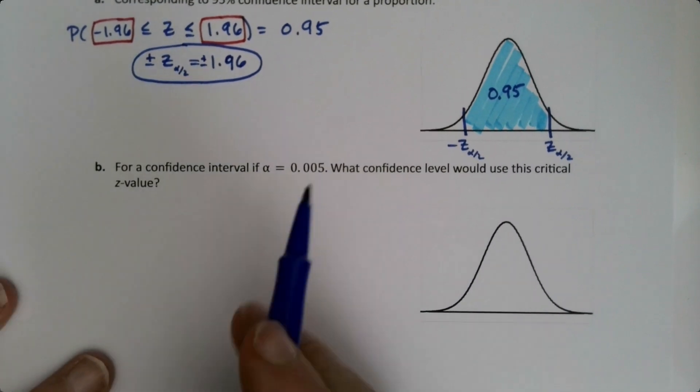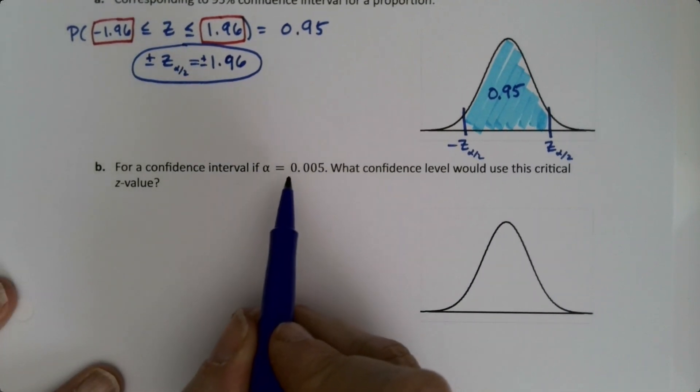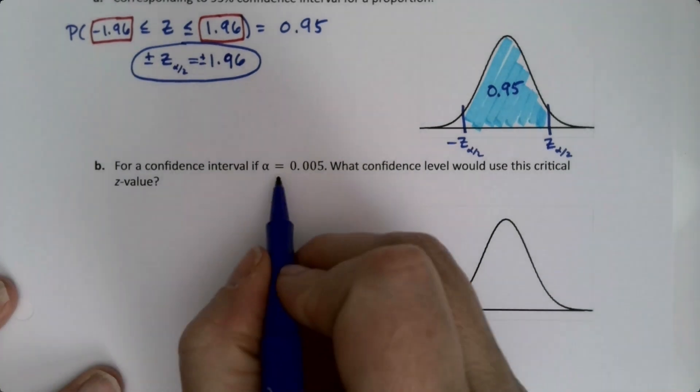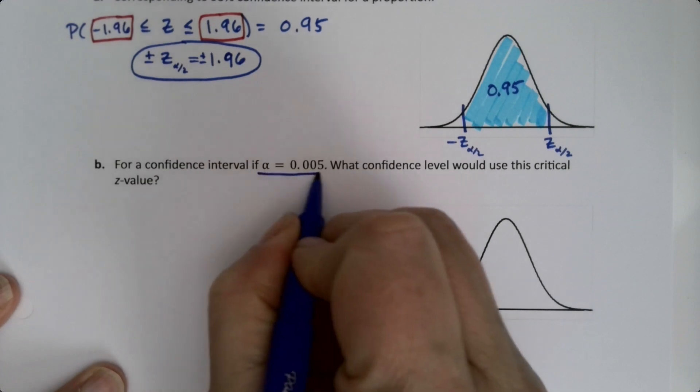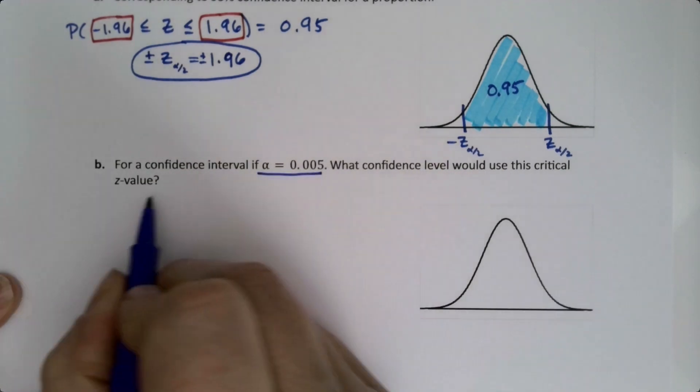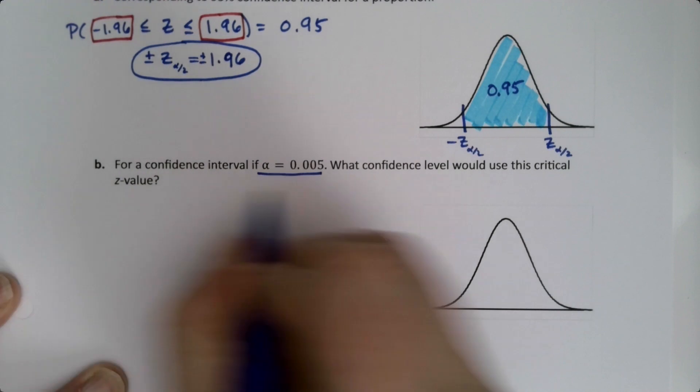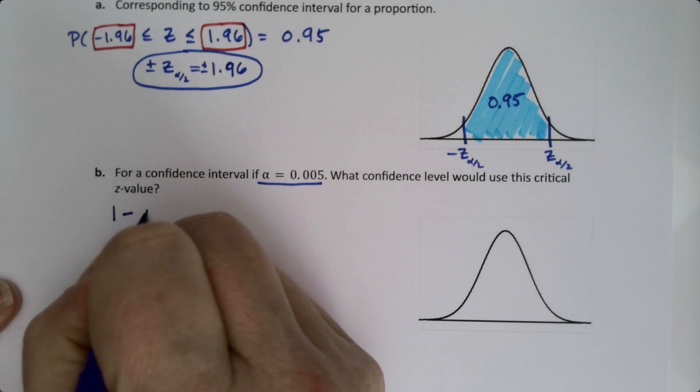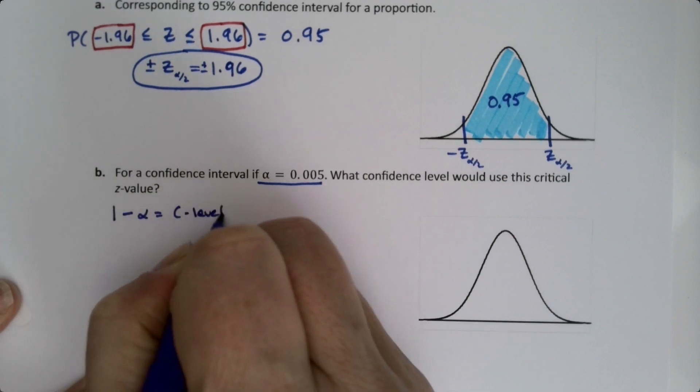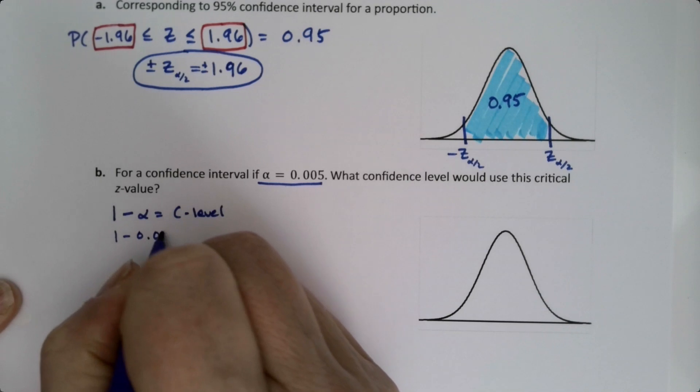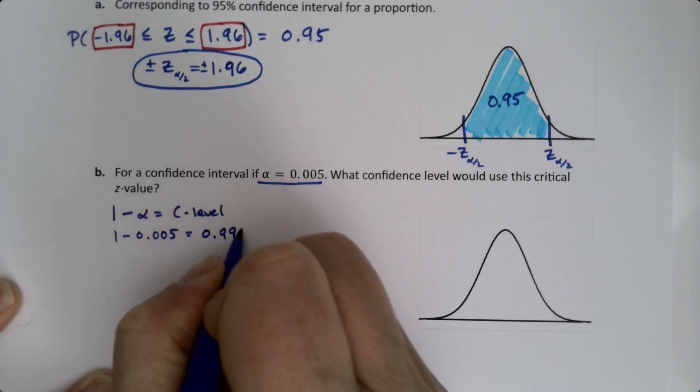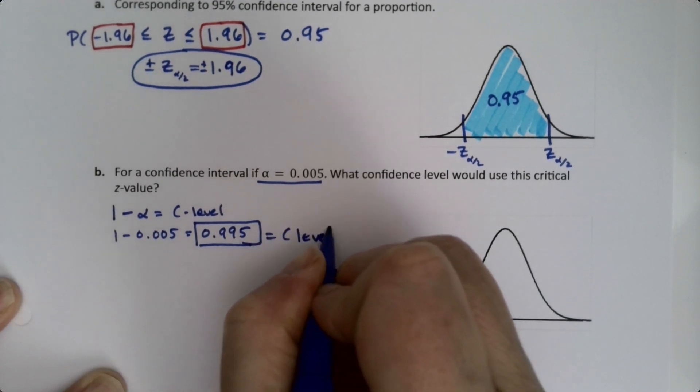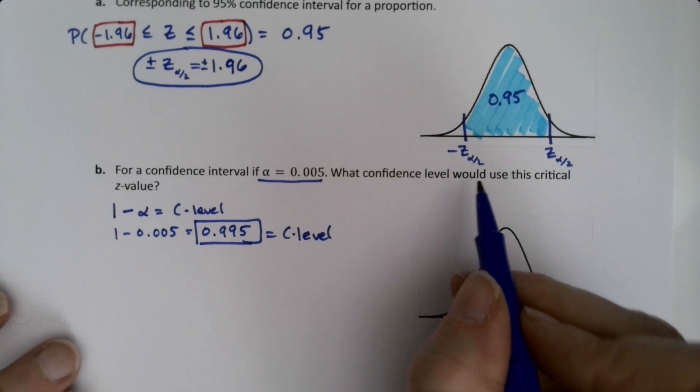All right, now what about this one? Well, that's a little trickier because they're giving us alpha. So we have to remember that alpha is the area in both the tails. So, which is fine, right? Or let's put it this way, remember that alpha and the c-level are complements of each other. And that's the first question it asks, is what confidence level would use this? So, 1 minus alpha is your c-level, right? Because they're complements of each other. So, 1 minus 0.005 is 0.995. So, that's our confidence level. So, that answered that question. It wanted to know what confidence level would use that. So, there we go.